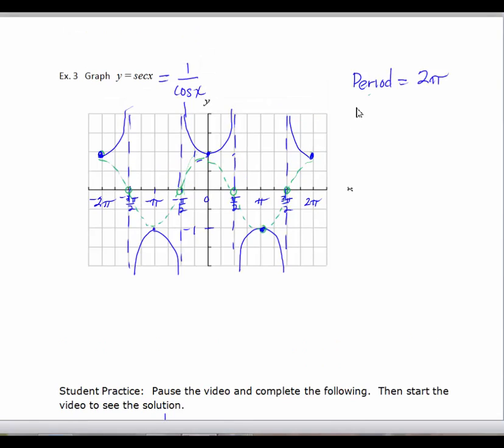The domain for secant is going to be the same as the domain for the tangent. Remember, the tangent is sine over cosine, and the secant is 1 over cosine. And we know that whenever the cosine is equal to 0, we have a vertical asymptote. So these are values of x that are not in the domain. So our domain is going to be x cannot equal kπ over 2. k is an odd integer.